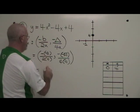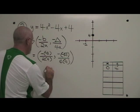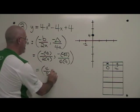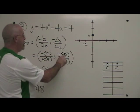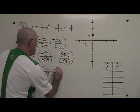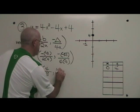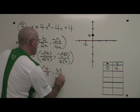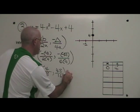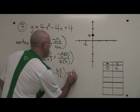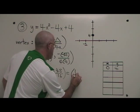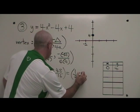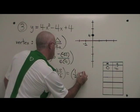Negative of negative 4 is positive 4. 2 times 4 is 8. Negative of negative 48 is positive 48. 4 times 4 is 16. Our vertex simplifies to 1 half, 3.